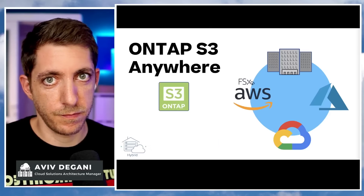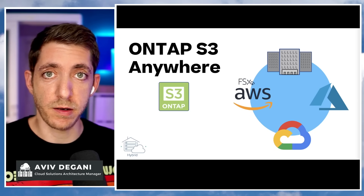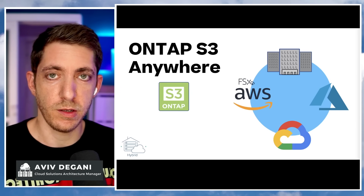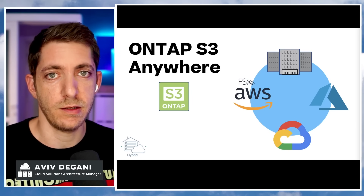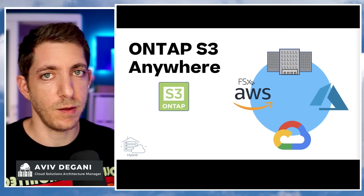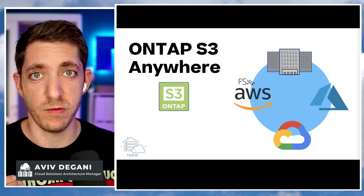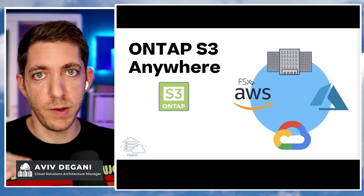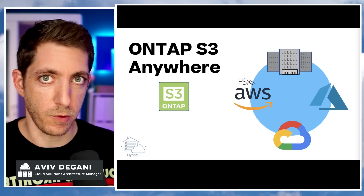So let's start. The first one is ONTAP S3, which can now run anywhere, and by that you have an ONTAP S3 that can reach extreme performance — unlike S3 in general — and it's also the same API, same platform across any hybrid multi-cloud environment, which can give you a really good baseline if you're not sure where to develop your application.